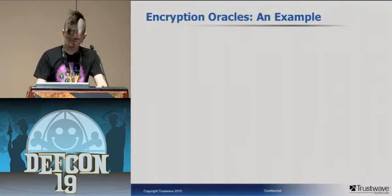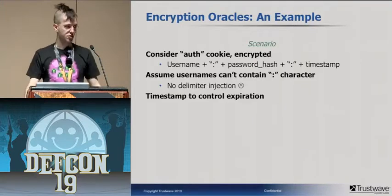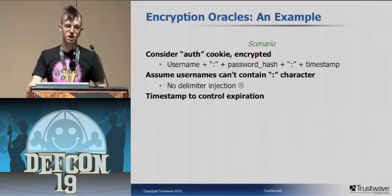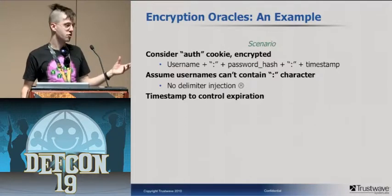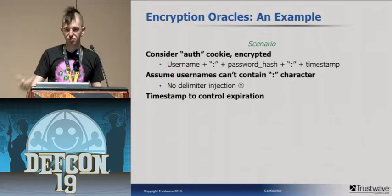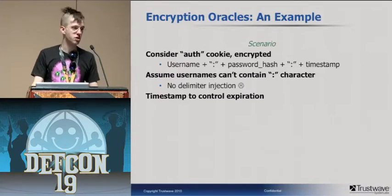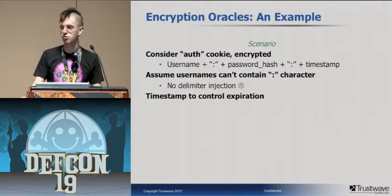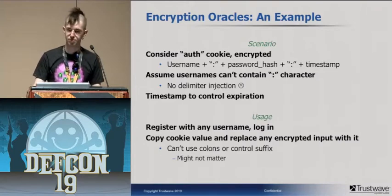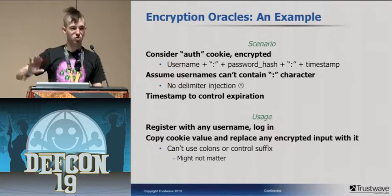Here's an example of where you might find an encryption oracle. Consider an authentication cookie that contains the username concatenated with a colon, password hash, colon, and a timestamp — timestamps prevent replay attacks. Assuming usernames can't include a colon, so no delimiter injection. But this means we have a partial encryption oracle. We can't control the whole thing, but we control the username. If the only restriction is that we can't control the colon, we can do a lot of interesting things — we can encrypt a lot, just not control what goes at the end.